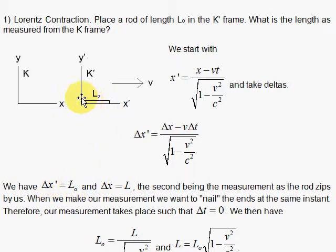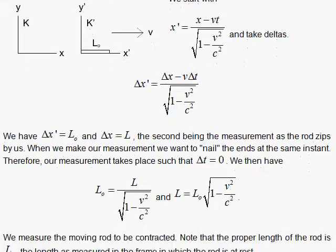My delta X will be the length here. Delta X prime is the length as measured in the prime frame. And this is how the deltas are related. So letting delta T be equal to 0, we have delta X prime, which is the L sub 0, and delta X, which is the laboratory measurement L, divided by this square root. The delta T is 0.